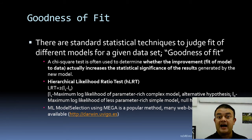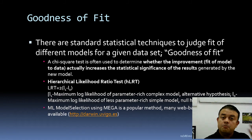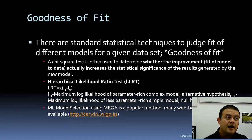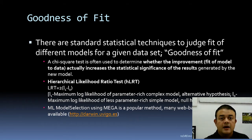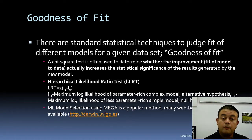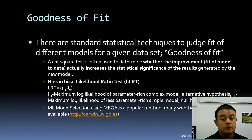PAUP is only for Apple Mac computers, and it is not free — it is very expensive. There are many better alternatives for Unix/Linux systems and Windows systems. MEGA is one very simple and efficient software. For MEGA, they use a slightly different approach: maximum likelihood-based model selection.